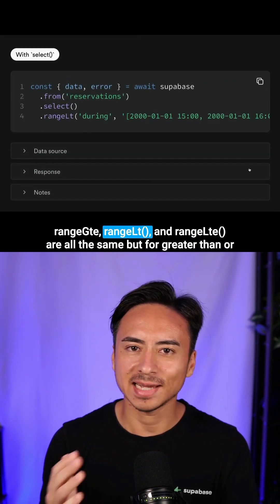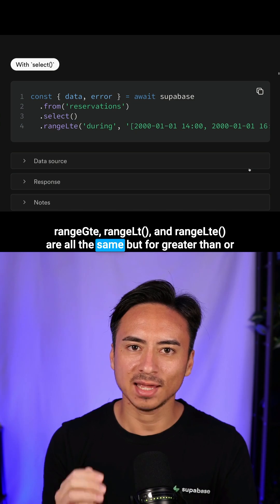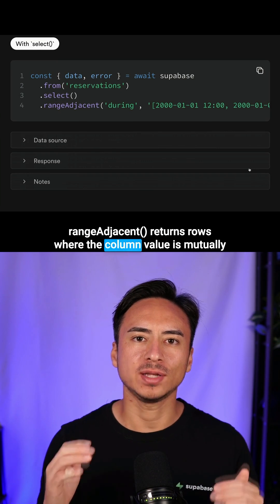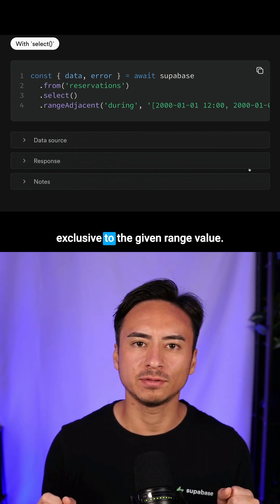Range GTE, Range LT, and Range LTE are all the same, but for greater than or equals, less than, and less than or equals. Range ADJSON returns rows where the column value is mutually exclusive to the given range value.